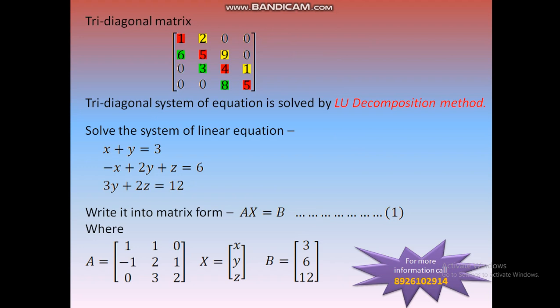The example system is: x plus y equals 3; minus x plus 2y plus z equals 6; 3y plus 2z equals 12. In the equation Ax equals b, matrix A is [1, 1, 0; -1, 2, 1; 0, 3, 2]. This is the Tri-Diagonal matrix.